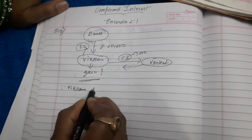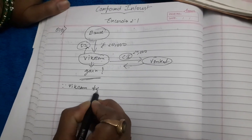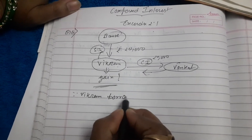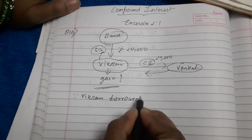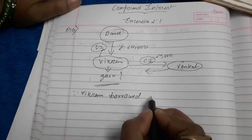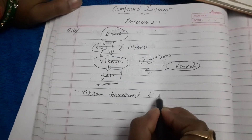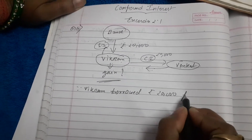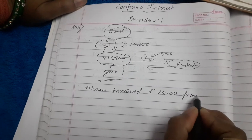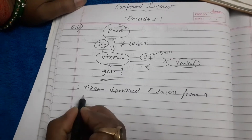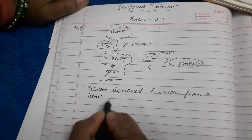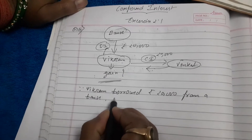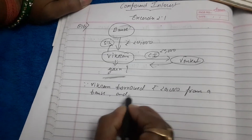Since Vikram borrowed rupees 20,000 from a bank, he is supposed to pay simple interest to the bank.